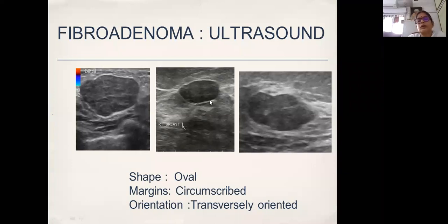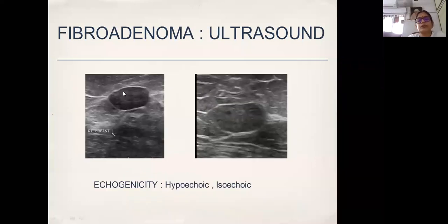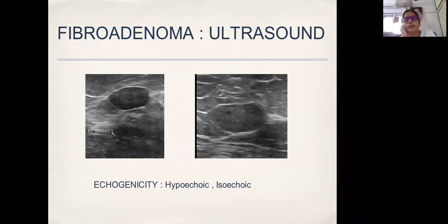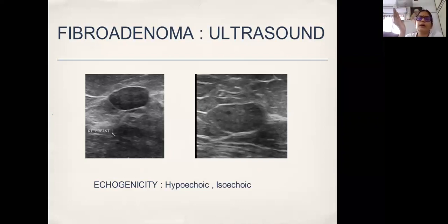Most fibroadenomas and most benign lesions are transversely oriented. Echogenicity is largely observer-dependent because if the grayscale is set wrong on the machine, you can make a hypoechoic lesion appear anechoic or isoechoic. The grayscale setting comes with experience. This lesion here is hypoechoic — darker than the surrounding fat tissue. But this one is more or less similar in color to the surrounding tissue, so I would call that isoechoic.